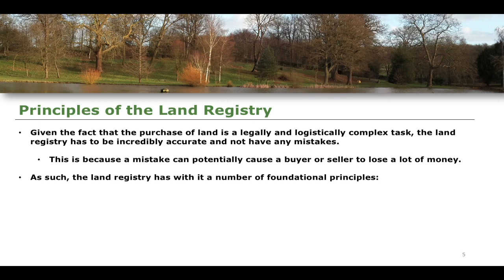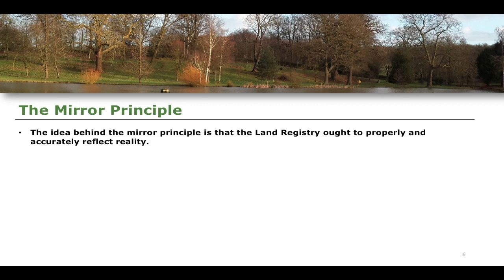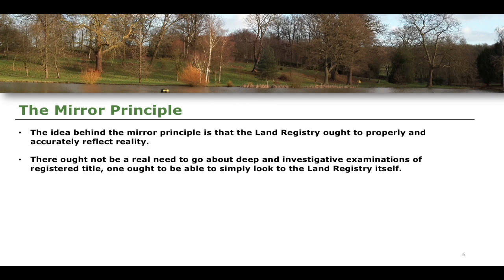There are three foundational principles of the Land Registry: the mirror principle, the curtain principle, and the insurance principle. Beginning with the mirror principle — the idea is that the Land Registry ought to properly and accurately reflect reality. That is why it is called the mirror principle: it is supposed to mirror reality. This means there ought not to be a real need to do a lot of deep investigative examination of registered title.